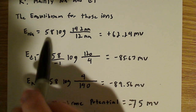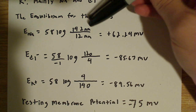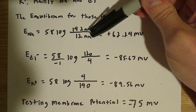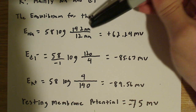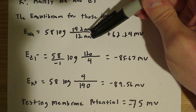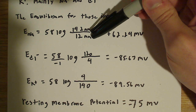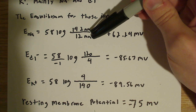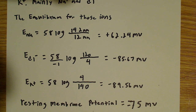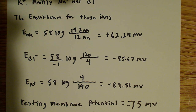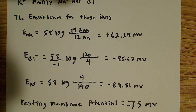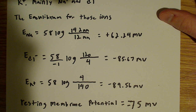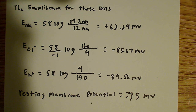I'm going to do that with the standard equation: 58 log of the concentration outside over the concentration inside the cell. This is just your standard Nernst equation.